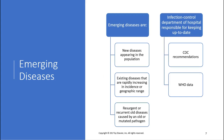Emerging diseases are new diseases appearing in the population, or existing diseases that are rapidly increasing in incidence or geographic area — so they can be geographically specific. There's also the resurgence of old diseases caused by mutated pathogens. For example, MRSA has been around forever, but now there are antibiotic-resistant strains. The hospital's infection control department uses CDC recommendations and the World Health Organization (WHO) to monitor emergent diseases globally.